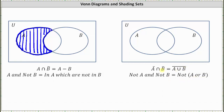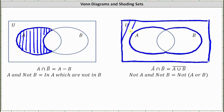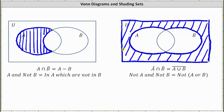Let's focus on the set of elements that are not in A and not in B. We want to shade the region outside A and outside B, which would be this region here. This region represents A complement intersect B complement, as well as the complement of A union B.